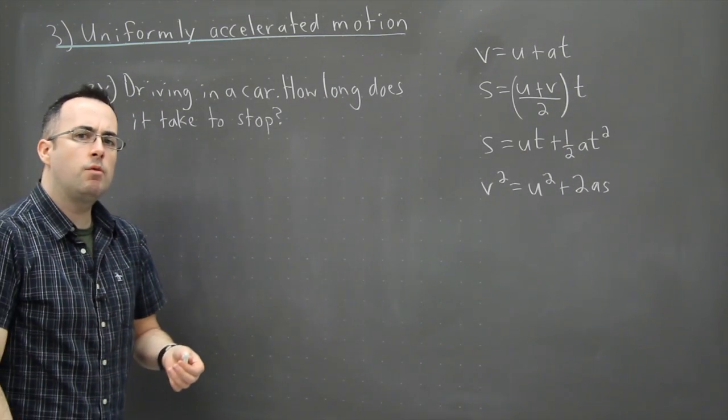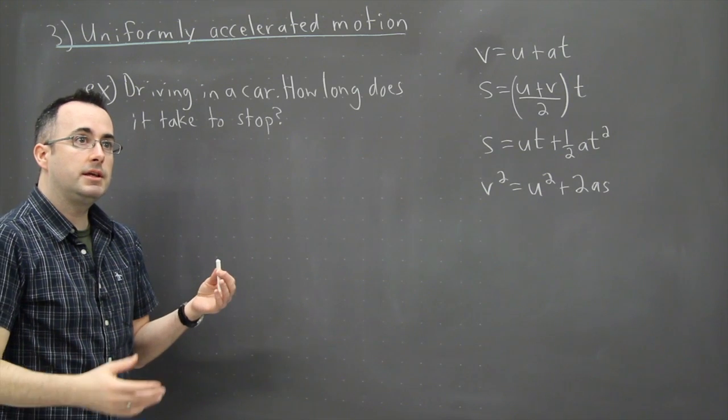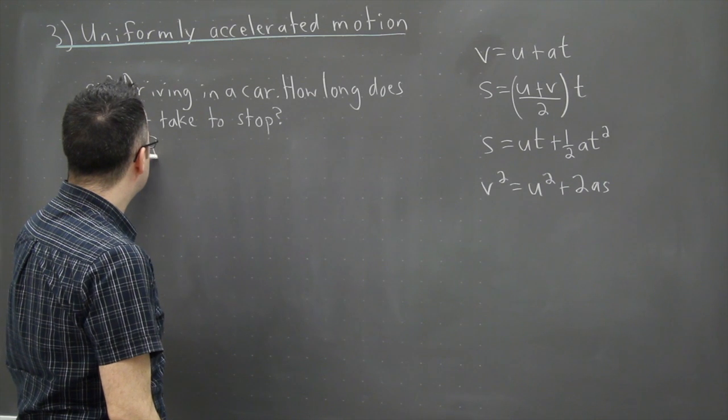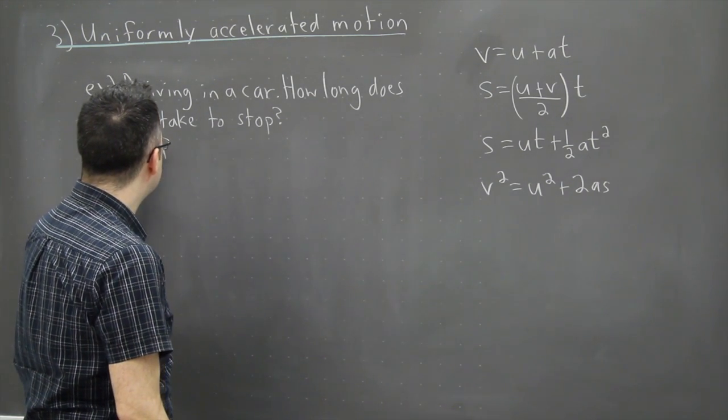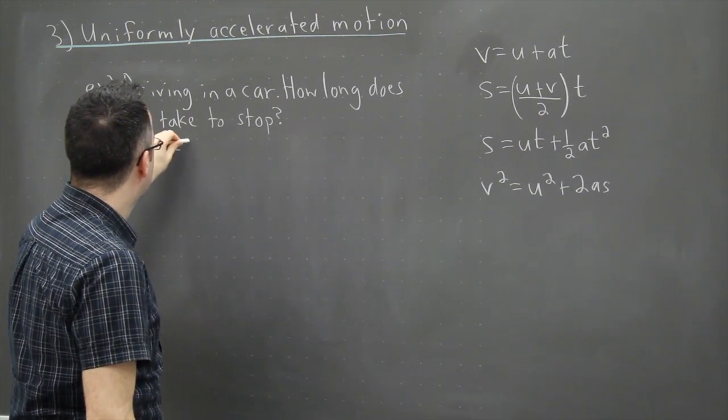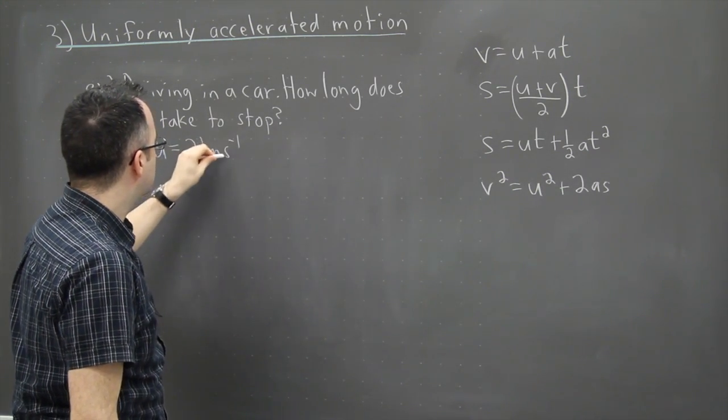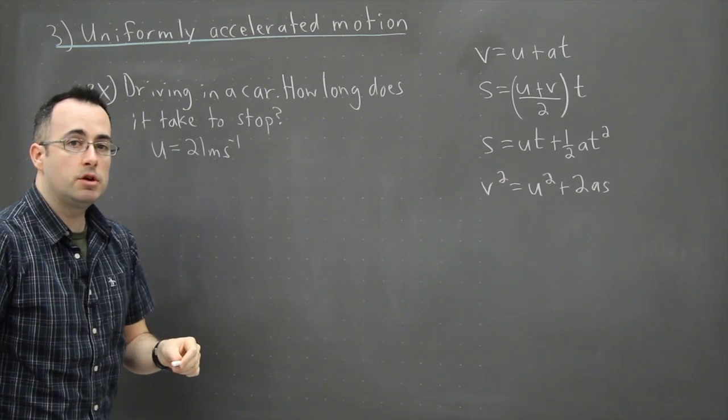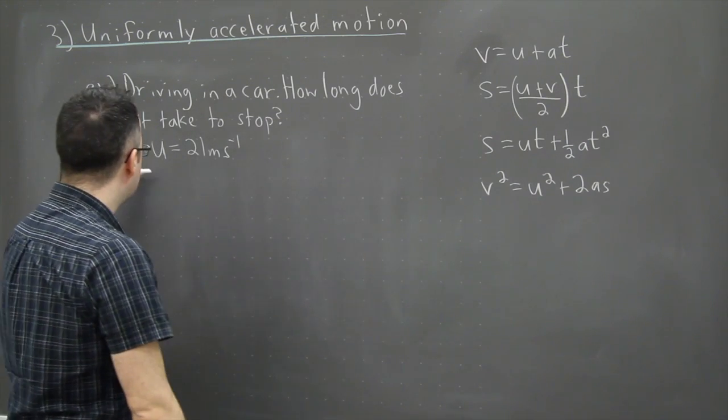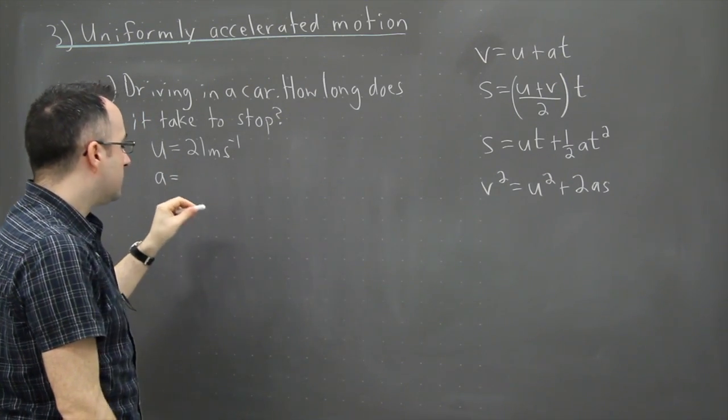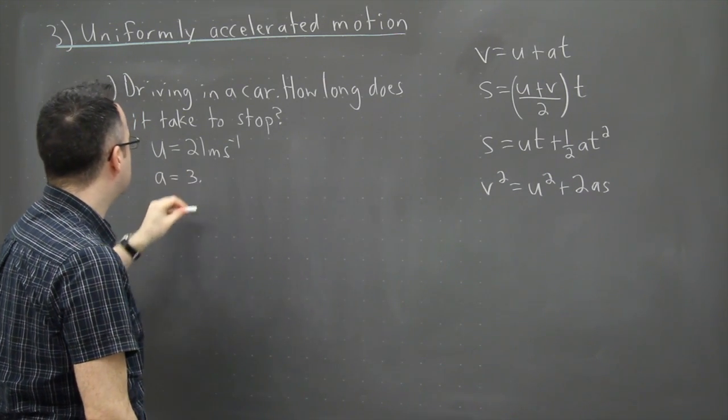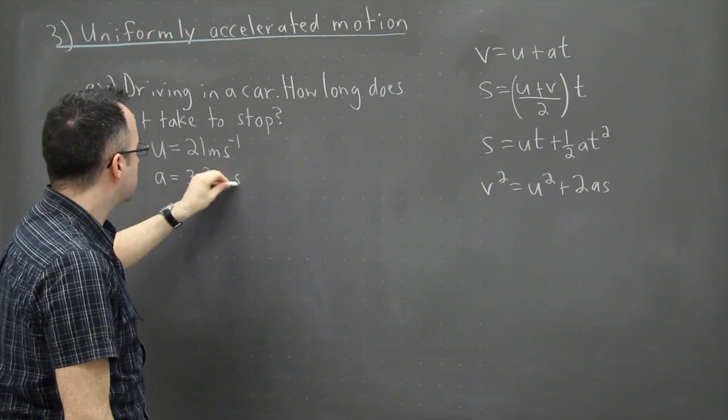So we're going to be given some information. So let's say I want to know the initial speed. So how fast am I going initially? Well that will be given. So let's just say the initial speed will be given as, it doesn't really matter but let's just say something like 21 meters per second. And then we need to know something else. So here let's assume that we know how much the acceleration is. So in this case I know sort of how hard I'm pressing on the brake pedal. So my acceleration could be let's say 3.2 meters per second squared.